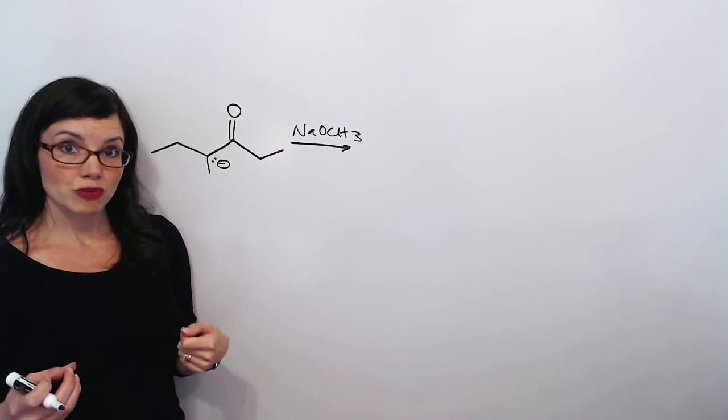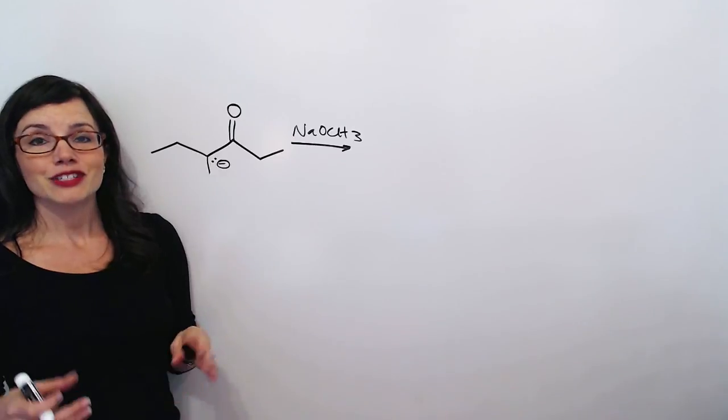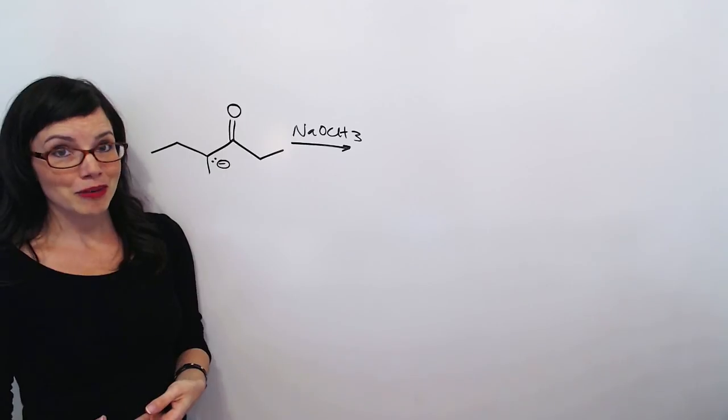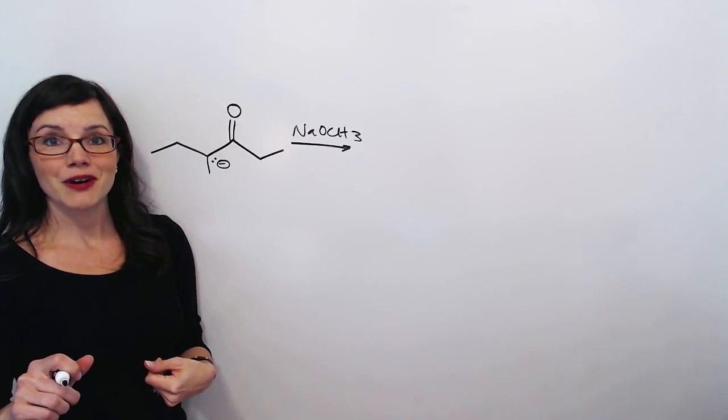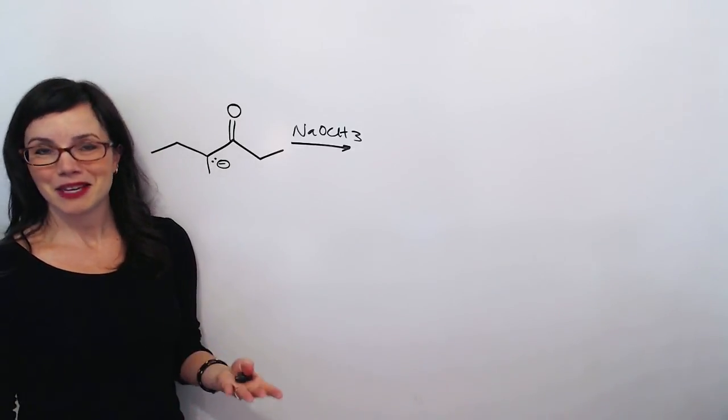Now, our next step is to redraw this same ketone or aldehyde and draw a bond between this alpha carbon and the carbonyl carbon of our other molecule and then push the electrons up onto the O. So why don't you try that, hit pause, and then let's come back and compare.